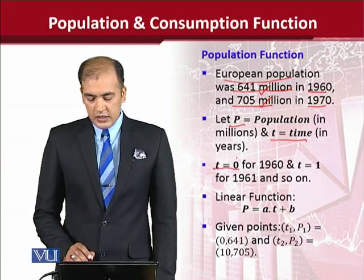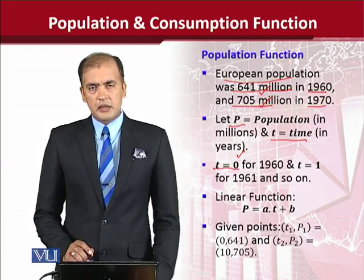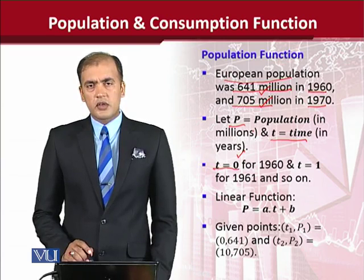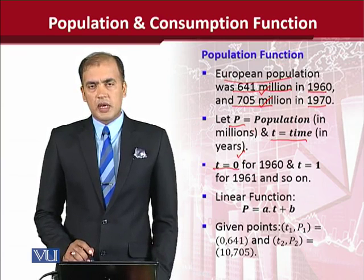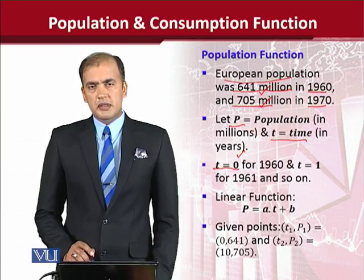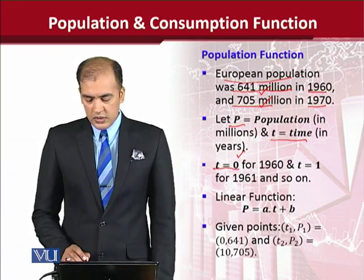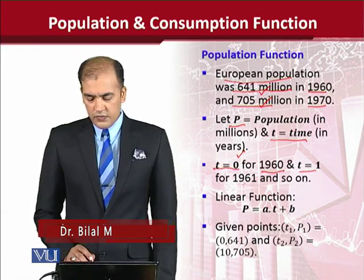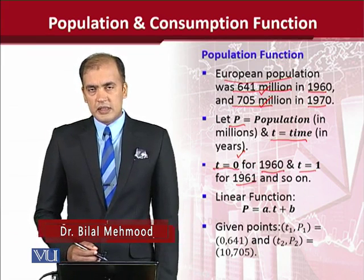It takes some time to collect census data and it cannot be done instantaneously. So the beginning of the time should be considered as 0. t equals 0 represents 1960, t equals 1 represents 1961, and this process continues.